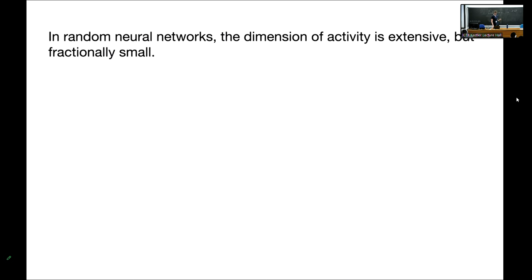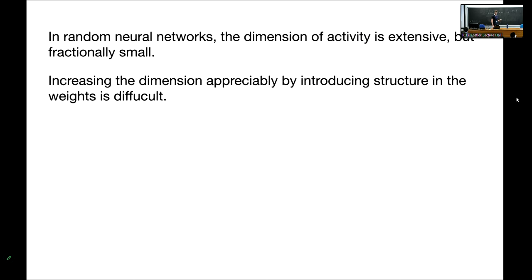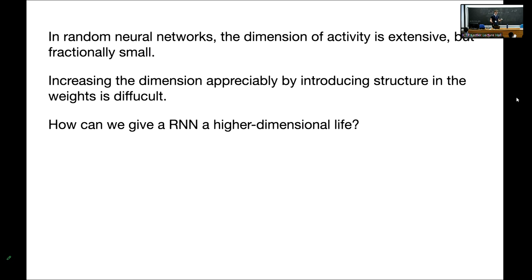So the takeaways: in random networks, the dimension of activity is extensive but fractionally small. Increasing the dimension appreciably by introducing structure into the weights is difficult. Just by being connected, neurons confine themselves to a low-dimensional part of phase space. A natural question is: how can we give an RNN a higher dimensional life? One avenue is to add more dynamical degrees of freedom.